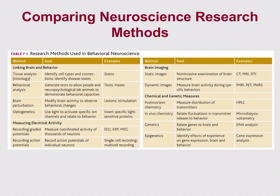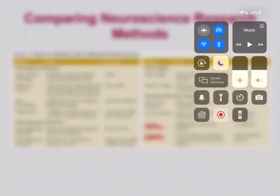This last slide is a comparison table of all the different methods — why we use them, what the goal is, and examples of each. It's a useful summary for comparing all the different analyses. We didn't cover genetics or epigenetics in detail, but there are gene expression and DNA analyses that can link genes to brain function and behavior. If you have any questions, please let me know.